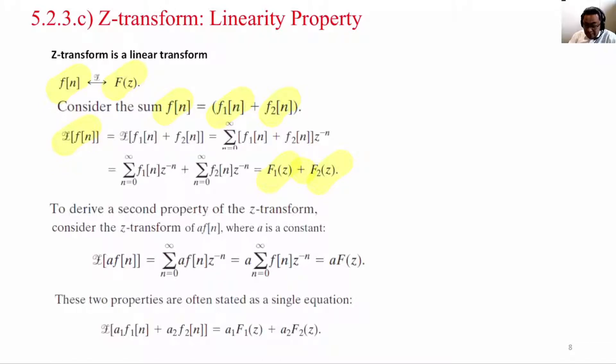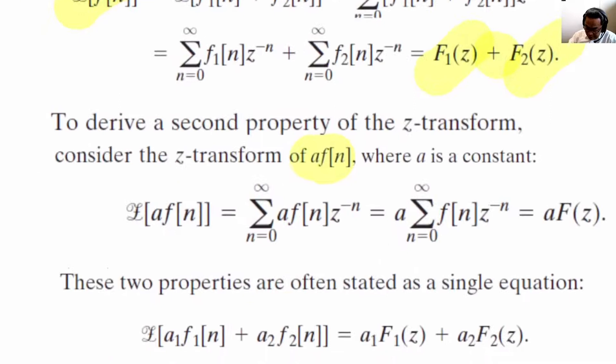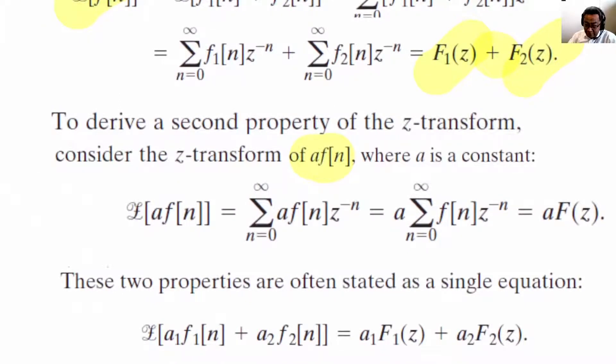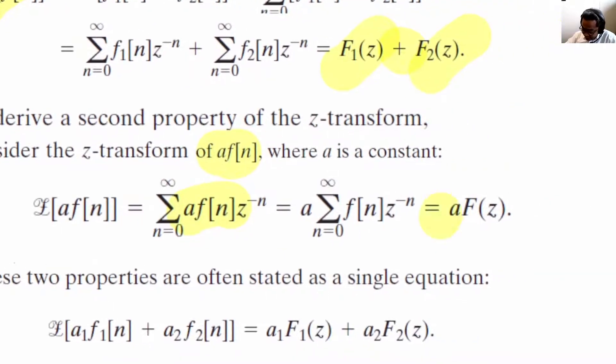For linearity property, the sum must obey this law as well as the second property which is the scalar multiplication. When we multiply A multiplied by Fn, it is the same as the Z-transform of A multiplied by Fn, or A times the Z-transform of Fn, which is Fz.